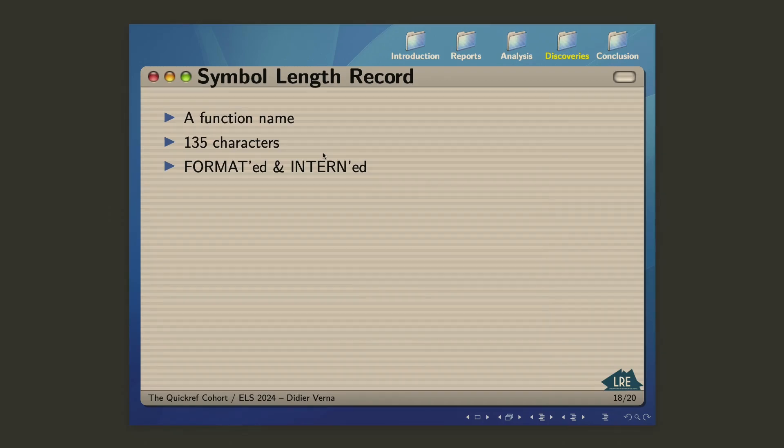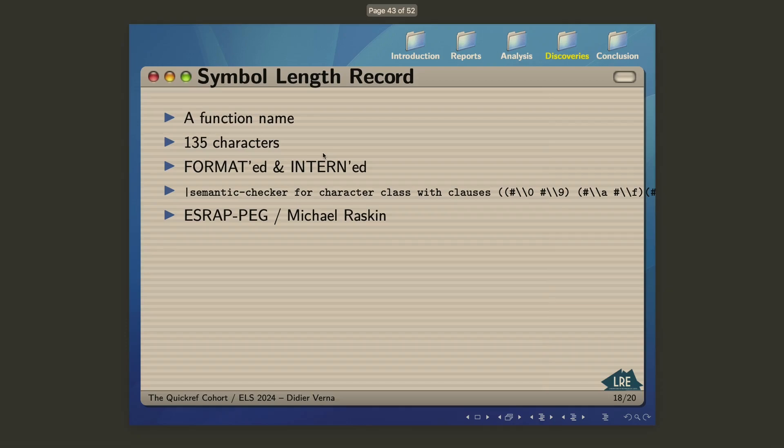The famous symbol length, symbol name length record. So it's a function name. It's, as I said before, 135 characters long. Actually, it's not handwritten, this one. The symbol has been obtained by formatting a format string with a number of arguments and then interning a symbol in some package. Here is the name of the symbol. It doesn't fit on the slide. It's semantic checker, note the spaces, four character classes with clauses. 135 characters later. You have to congratulate Michael Raskin for the SRAP package. Please give Michael a round of applause.